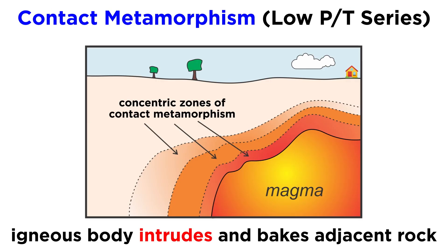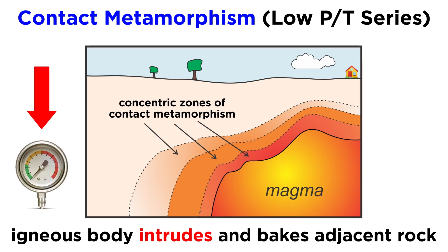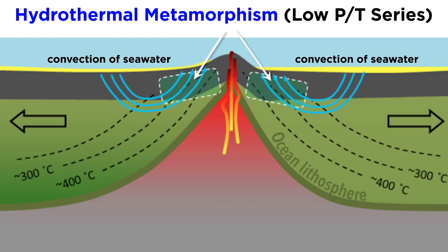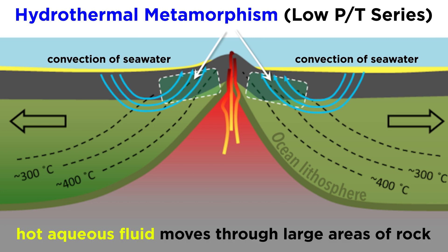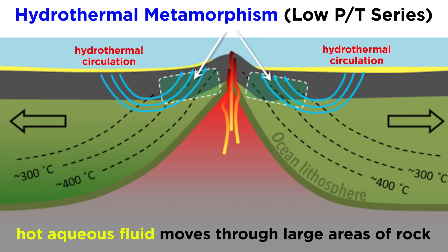Contact metamorphism occurs when an igneous body intrudes into an area through numerous fractures and bakes the adjacent rocks. It occurs at low pressure, since igneous intrusions mainly occur at shallow depths, and at high temperatures due to the heat supplied by the magma. A similar type of metamorphism, hydrothermal, occurs when hot aqueous fluids move through large areas of rock, supplying heat and chemically active ions that cause recrystallization.